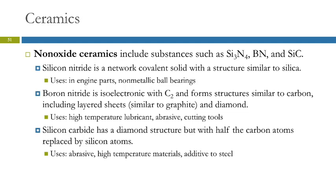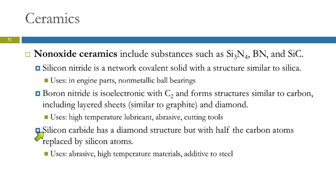Boron nitride can be used for high-temperature lubricants, abrasives, and cutting tools. Silicon carbide — we asked Siri what the formula was and she told us it was SIC, spelled S-I-C. That's not actually a molecule; it's a network covalent atomic solid with an equal number of silicon and carbon atoms. It takes on a diamond structure, but half the carbon atoms are replaced by silicon.